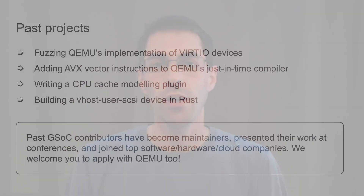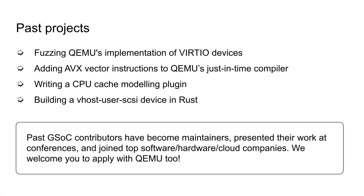Some examples of past projects include fuzzing QEMU's VirtIO devices, adding AVX vector instructions to QEMU's just-in-time compiler, writing a CPU cache modeling plugin, and building a vhost-user SCSI device in Rust.